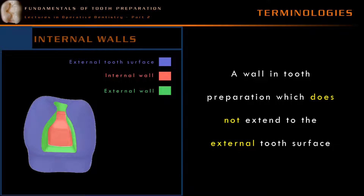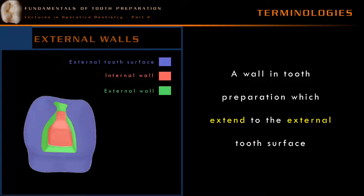The walls in a cavity preparation can be an internal wall or an external wall. An internal wall is a wall in tooth preparation which does not extend to the external tooth surface. In the diagrammatic representation here, the red colored area — which is a combination of the pulpal floor and the axial wall — does not come into contact with the external tooth surface. So in this representation, the pulpal floor and the axial wall are called internal walls.